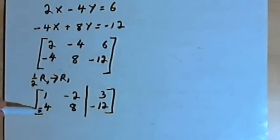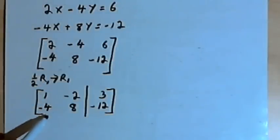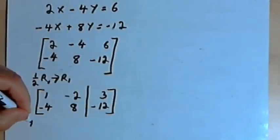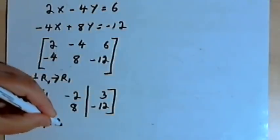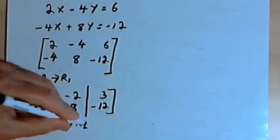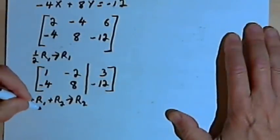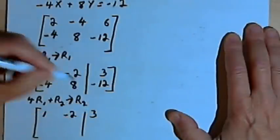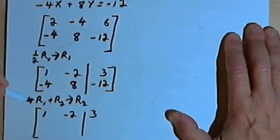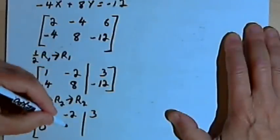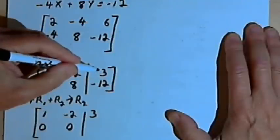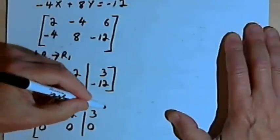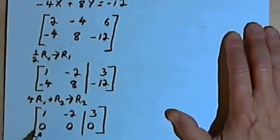The next step is to take the element in the second row, first column, and turn it into a zero. I can do that by multiplying 4 times row 1, adding it to row 2, and making that the new row 2. So: 4 times 1 plus negative 4 is 0; 4 times negative 2 plus 8 is 0; 4 times 3 plus negative 12 is 0. Now I've ended up with a bottom row that's all zeros.